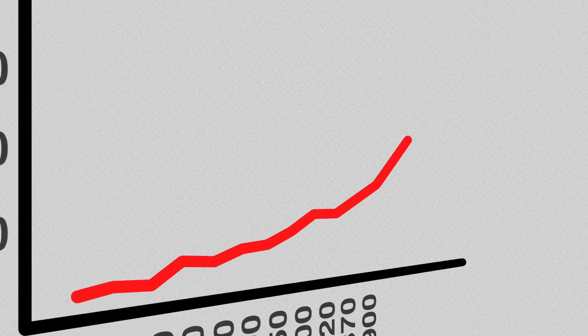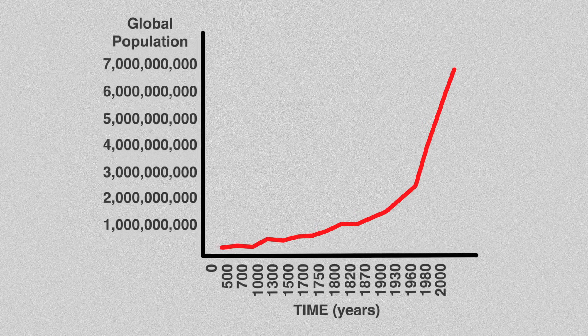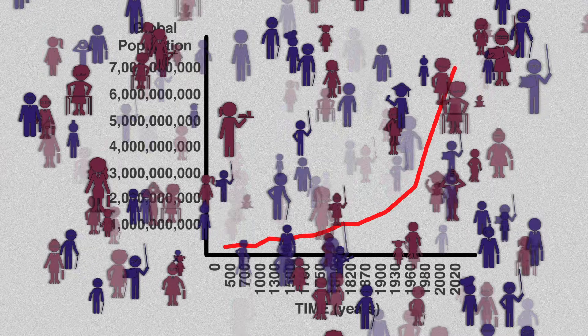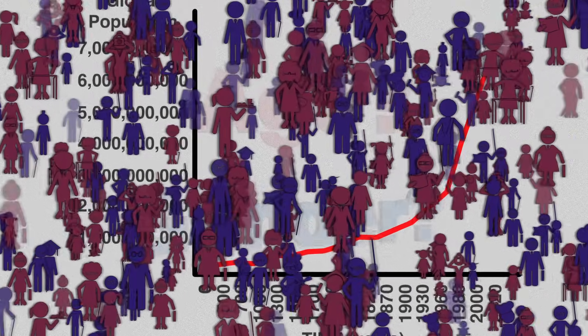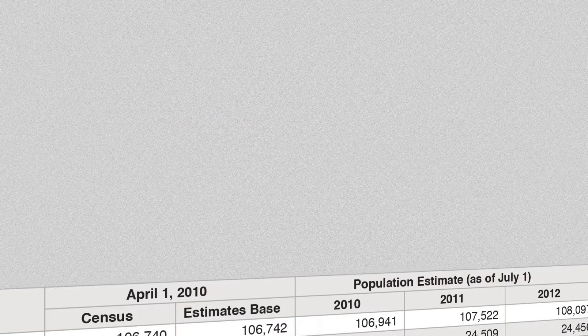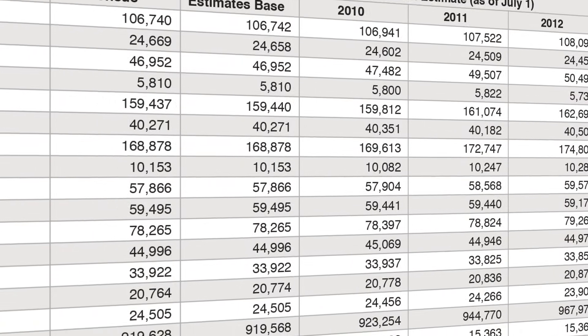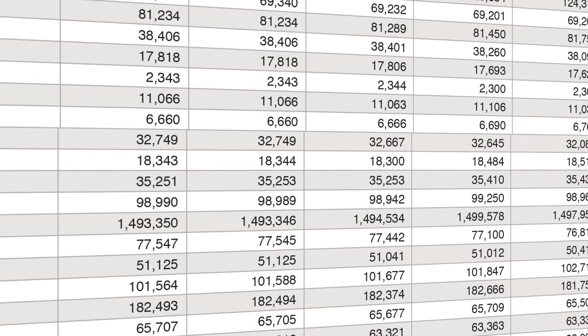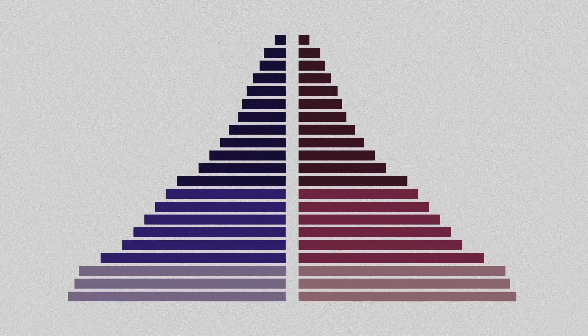Population statistics are some of the most important data social scientists and policy experts have to work with. But understanding a country's situation and making accurate predictions requires knowing not just the total size of the population, but its internal characteristics, such as age and gender distribution. Complex data is more easily interpreted through visualization, and one of the ways that demographers represent the internal distribution of a population is the population pyramid.